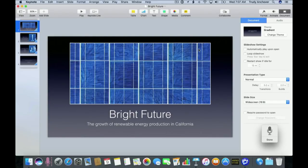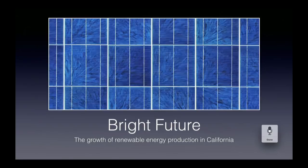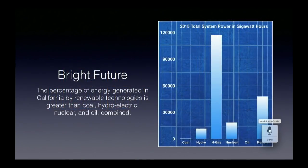'Start from the top.' 'Read this slide.' — Bright Future. The growth of renewable energy production in California. A close-up image of a solar panel displaying a grid of squares containing vertical sections of blue photovoltaic material. 'Read the next slide.' — Slide two of four. Bright Future. The percentage of energy generated in California by renewable technologies is greater than coal, hydroelectric, nuclear, and oil combined. A graphic showing that the amount of energy generated by renewable technologies is only surpassed by natural gas.